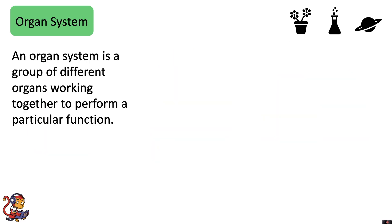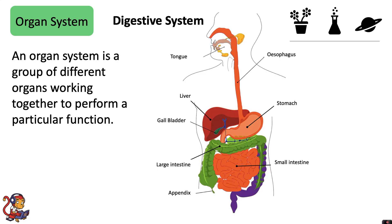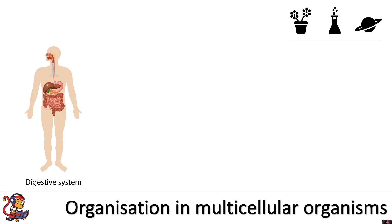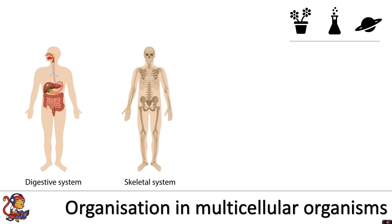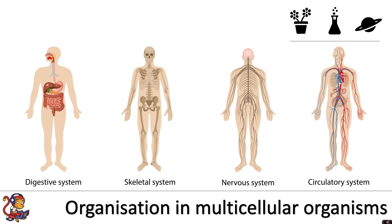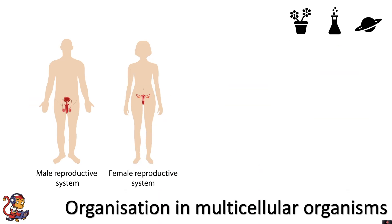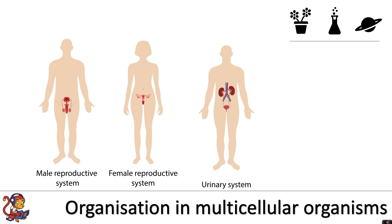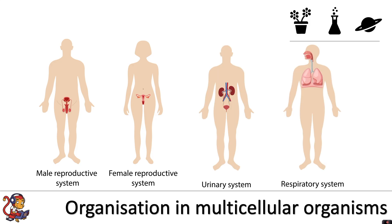The next level up is the organ system. An organ system is a group of different organs working together to perform a particular function. An example of this would be the digestive system, which is made up of several different organs, including the stomach, the liver, and the intestines, all working together to perform digestion. Other organ systems in the human body include the skeletal system, the nervous system, the circulatory system, the male and female reproductive systems, the urinary system, and the respiratory system.